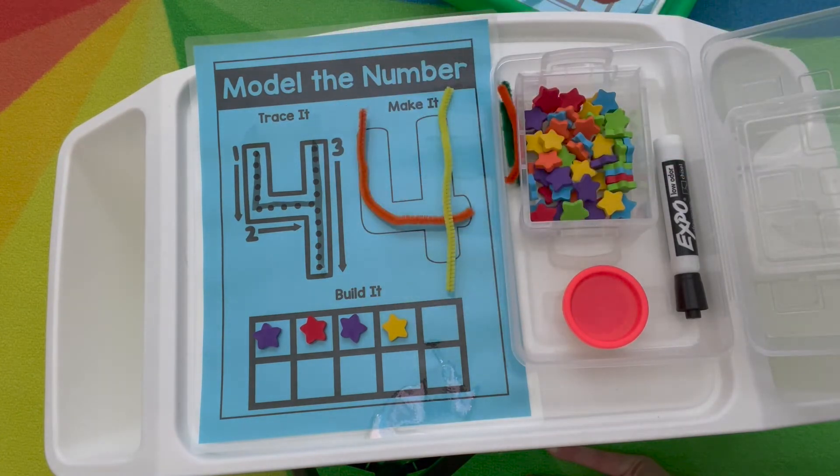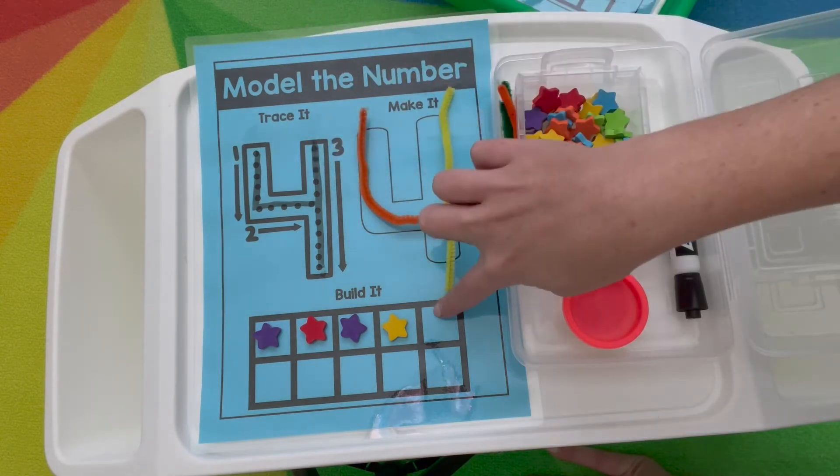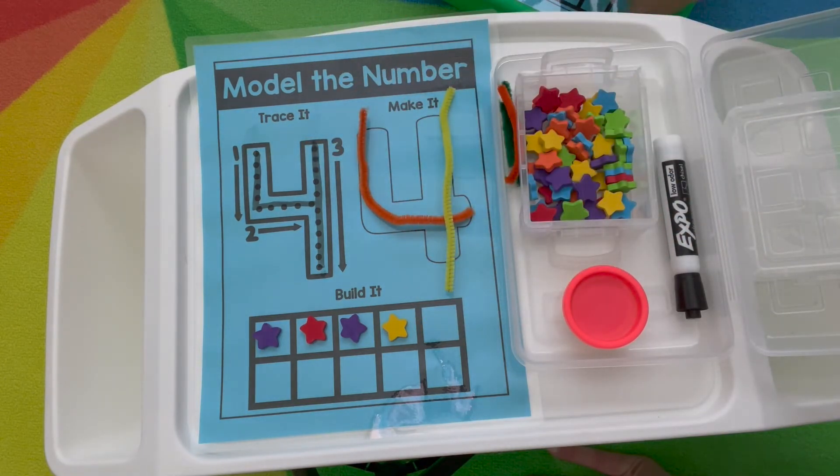And that'll go back to that essential question. How can we model numbers to five? So they can think about those three ways that they did it during this activity.